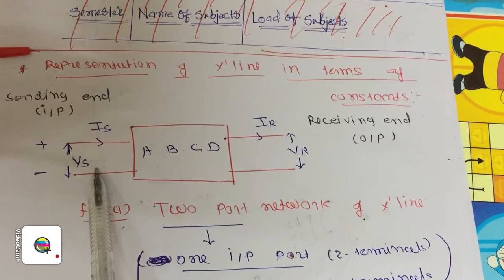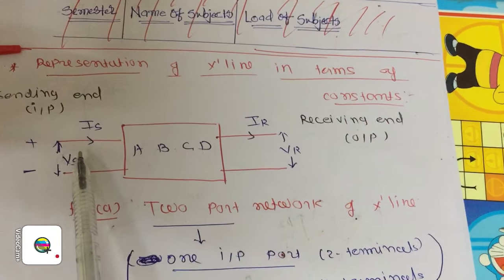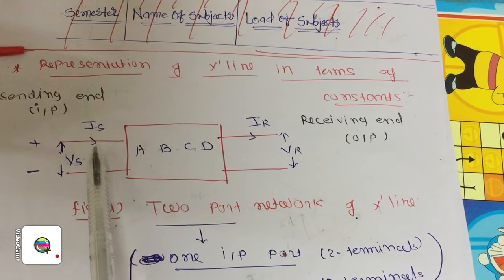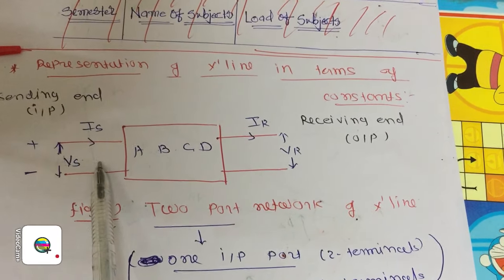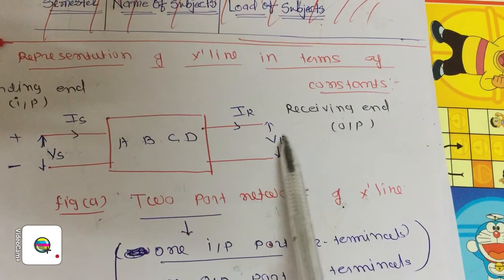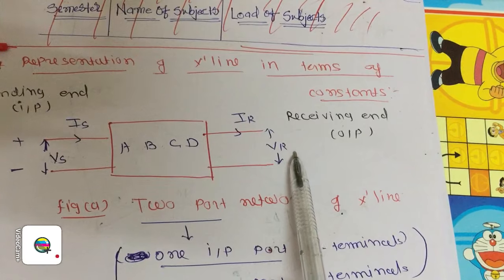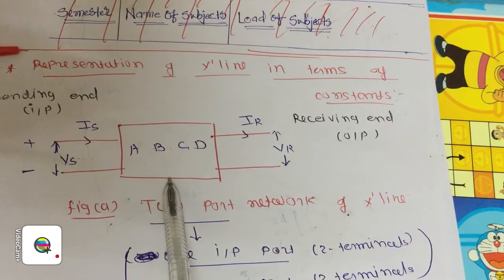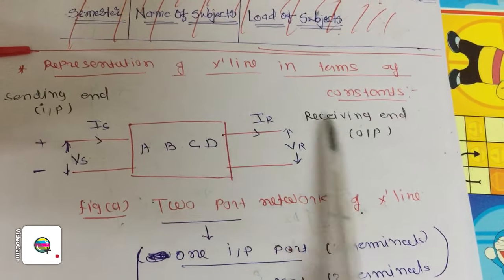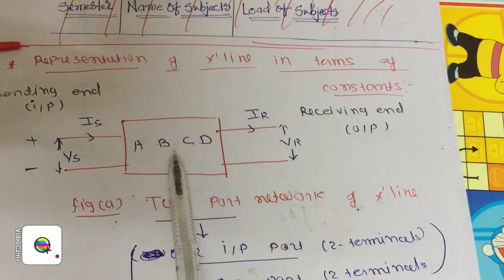This is the first port, which is the input port, because we are giving input from here. This is the second port, which is the output port, because we are taking output from here or connecting a load here. So this black box contains 2 ports: input port and output port. This is the 2-port network.